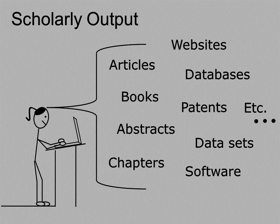We begin with a visual definition of scholarly output. We have our scholar and some of her outputs, and we attempt with this drawing to illustrate that while traditionally the focus has been on peer-reviewed articles and books, there is growing acceptance, especially within the ARL community, that scholarly output includes much more than published articles.